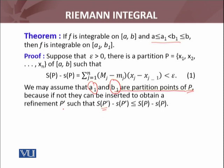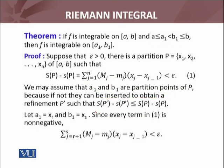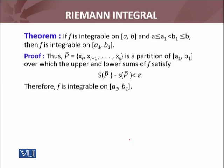Let a1 equals x_r and b1 equals x_s. Since every term in the summation is non-negative, we have this summation. Thus P bar, this is the partitioning of [a1, b1] over which the upper and lower sums satisfy this condition.